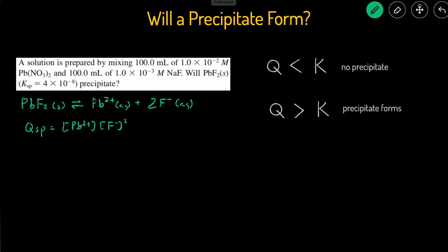Now we have to plug in the concentrations of Pb²⁺ and F⁻, but we can't just use the original concentrations because those were when the volume was 100 mL each. When we mix the two solutions, the volume changes, and so the concentrations also change. We need to find the new concentrations using M₁V₁ = M₂V₂, solving for the new molarity M₂.